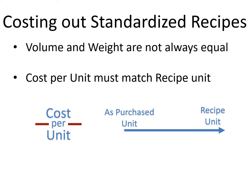Write this down: cost per unit — where 'per' is the division line. Cost per unit: as purchased unit, draw an arrow to the recipe unit. The cost per unit and the recipe unit must match.